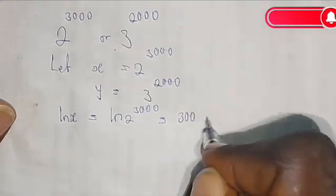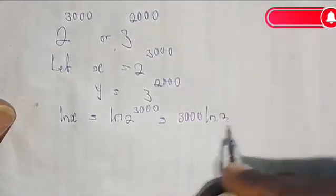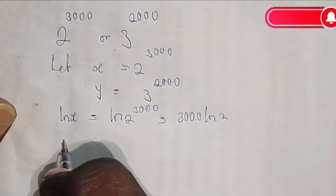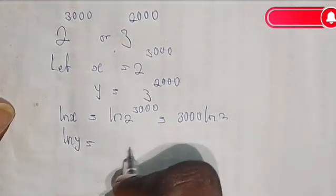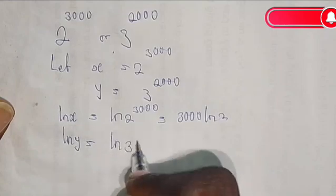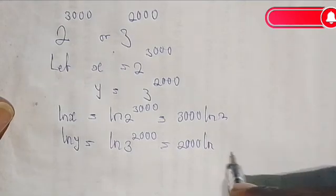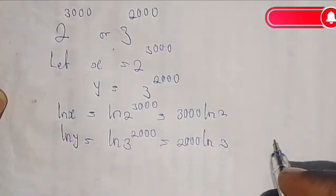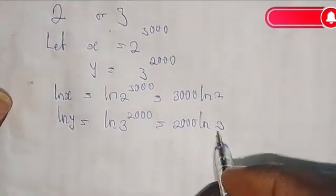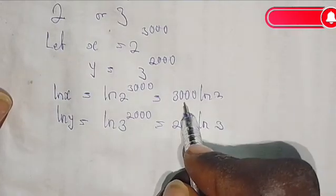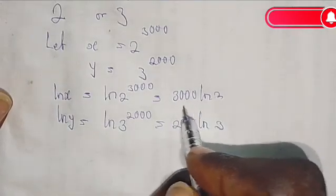This becomes 3000 times the natural log of 2. Also, the natural log of y equals the natural log of 3 raised to the power of 2000, which equals 2000 times the natural log of 3. Using the log power property, let's make this seem smaller.